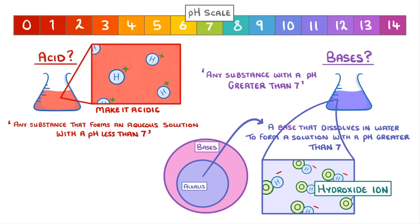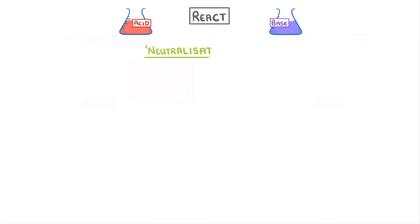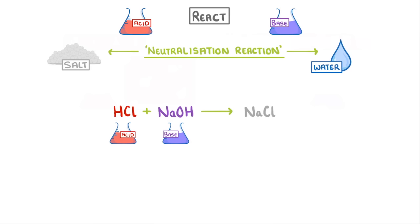If we react an acid and a base together, then we get a neutralisation reaction, which will always produce a salt and water. For example, hydrochloric acid plus sodium hydroxide, which are the most common acid and base, will react to form sodium chloride, which is a salt, plus water.